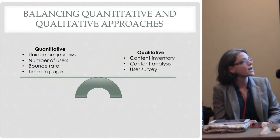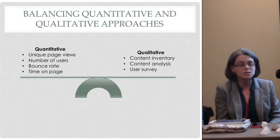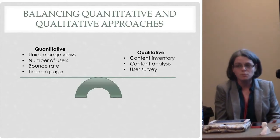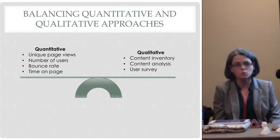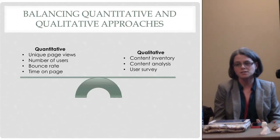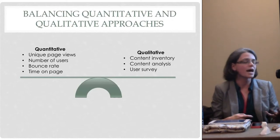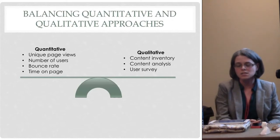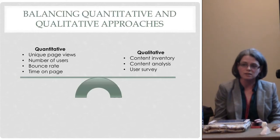We decided to use an approach advocated by a number of digital cultural heritage researchers that combines both qualitative and quantitative methods. In addition to using traditional Google Analytics like unique page views, time spent on page, and bounce rates, we're also doing a content inventory — going through every single page to figure out what's on there and what's still working — then doing analysis of what content is currently still available. Finally, we're adding that to a user survey, coming out in summer or fall of this year, to do a deep dive into our audiences to figure out what they like, what they don't like, and what could be added in the future redesign.